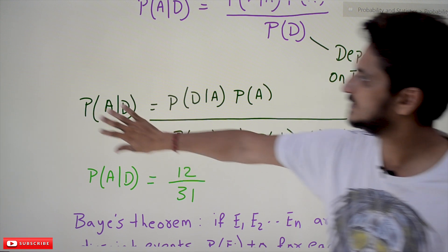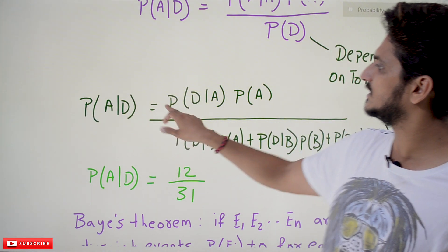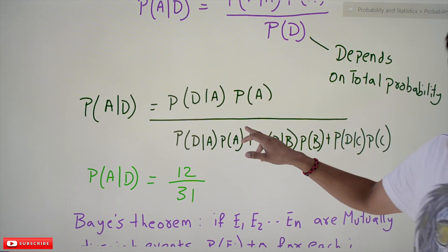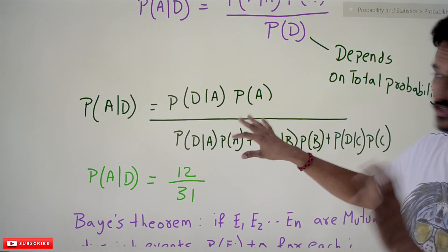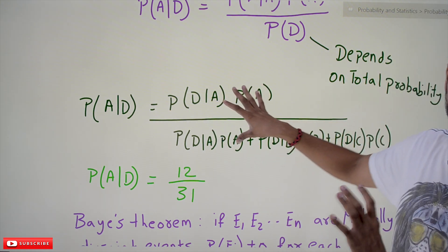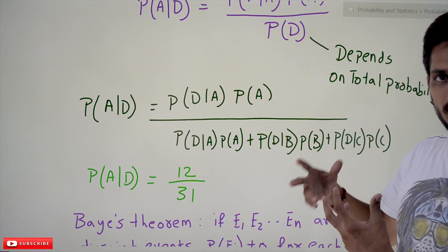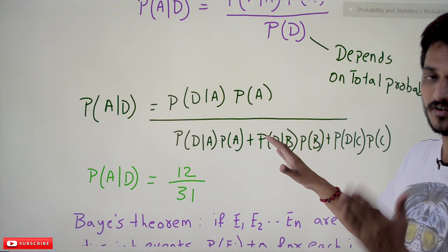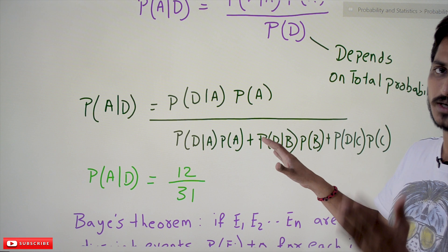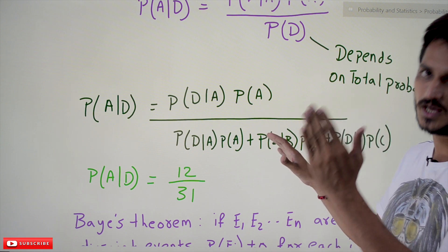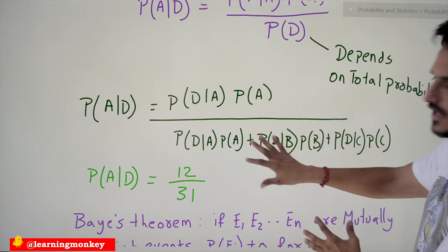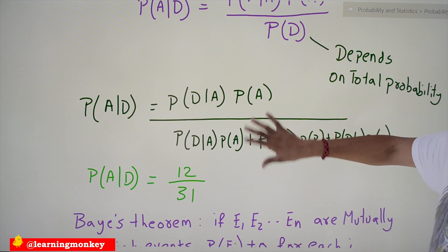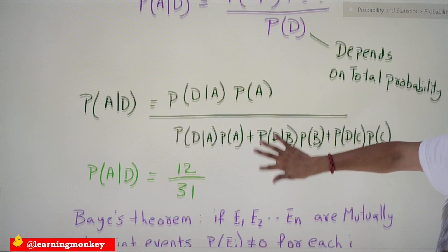Now our Bayes theorem equation is: probability of A given D is given by this final equation. This is the actual Bayes theorem equation we have to discuss. Initially, if we discuss this directly we don't understand it — that's why we divided it into two parts: total probability and Bayes theorem. Substituting the values, we get 12/31.